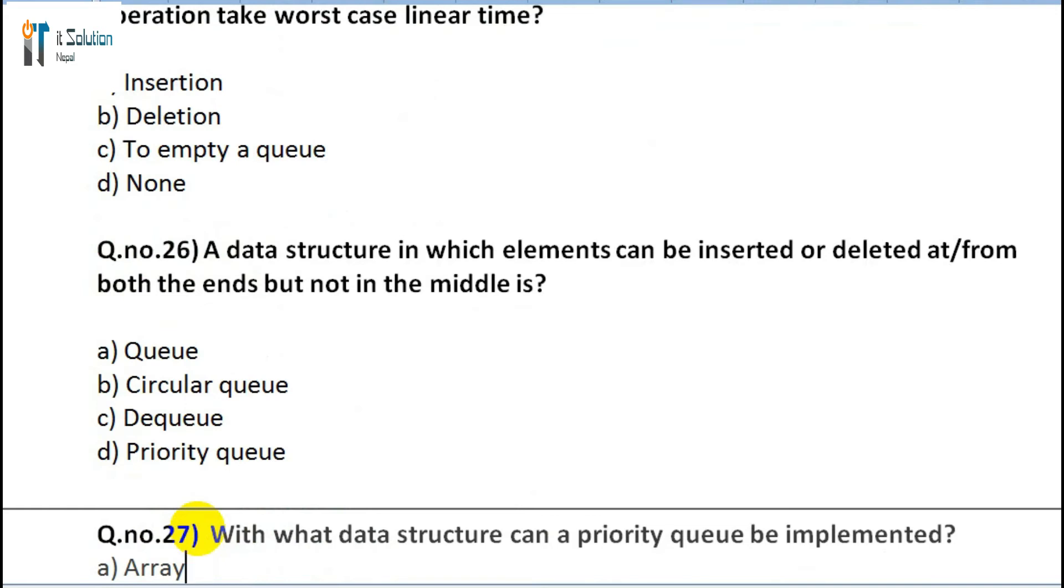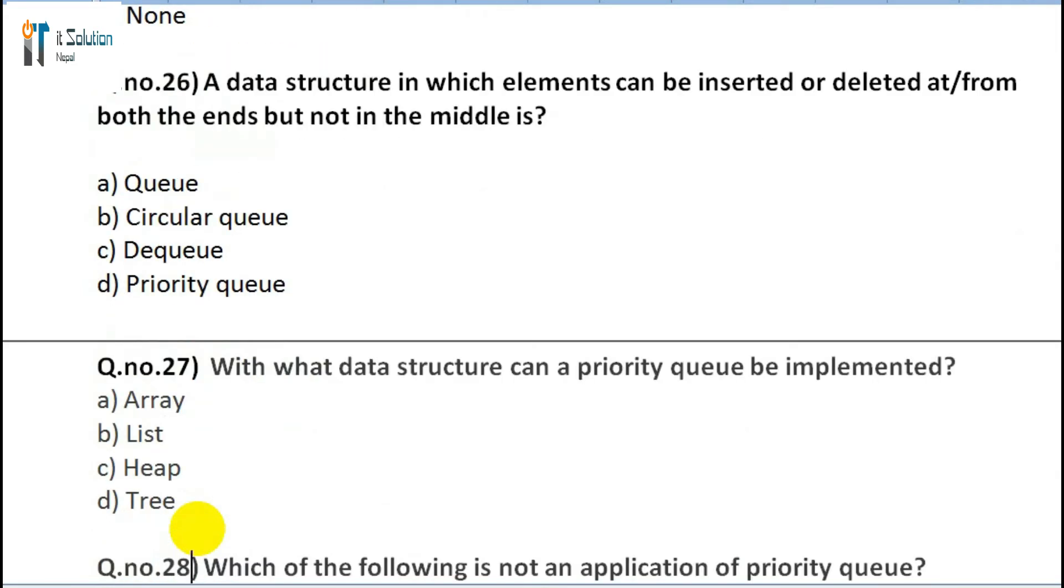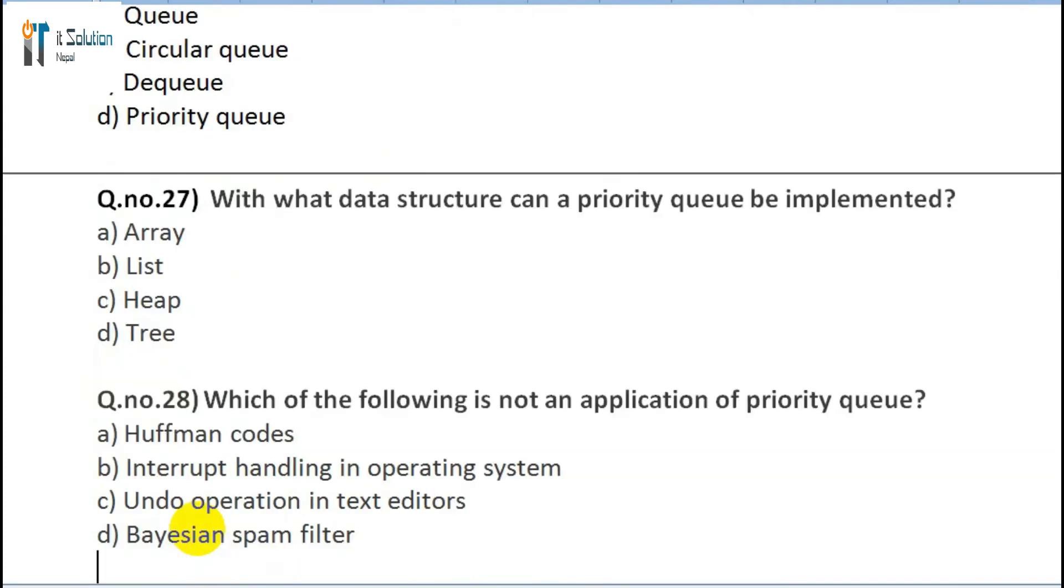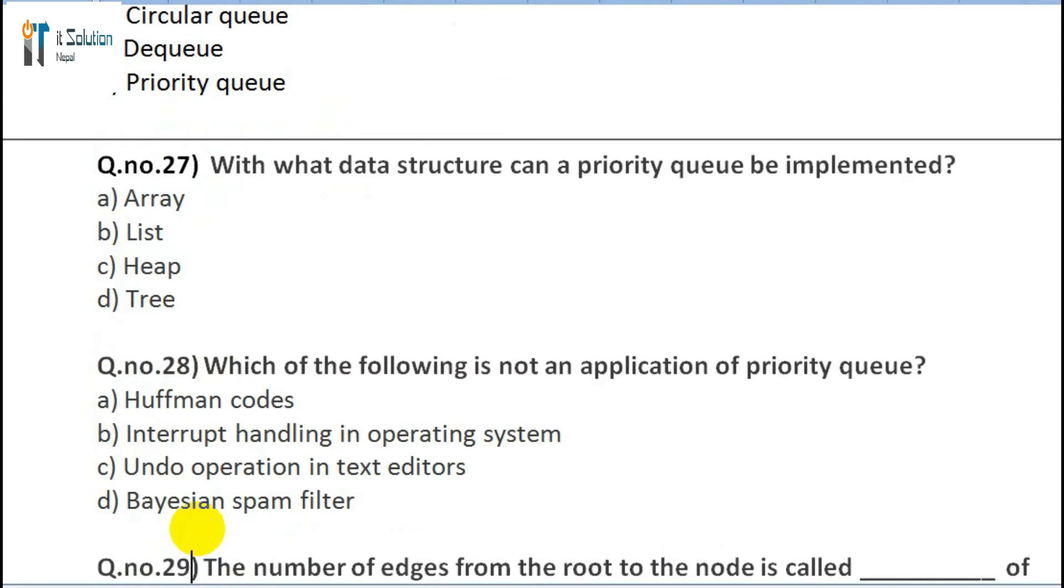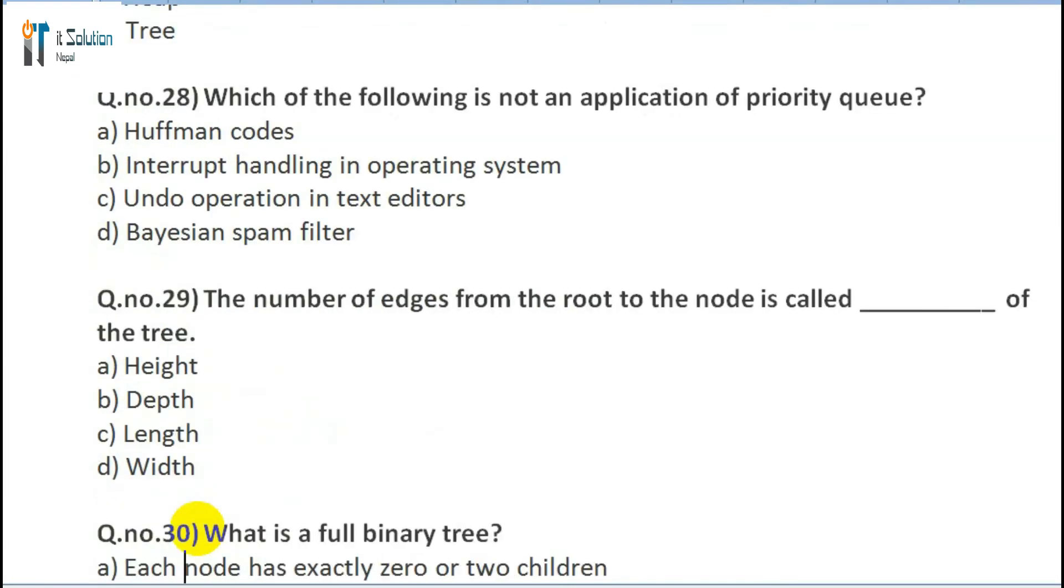Question 26: A data structure in which elements can be inserted or deleted from both ends but not in the middle is: A) Queue, B) Circular queue, C) Deque, D) Priority queue. Question 27: With what data structure can a priority queue be implemented? A) Array, B) List, C) Heap, D) Tree. Question 28: Which of the following is not an application of priority queue?